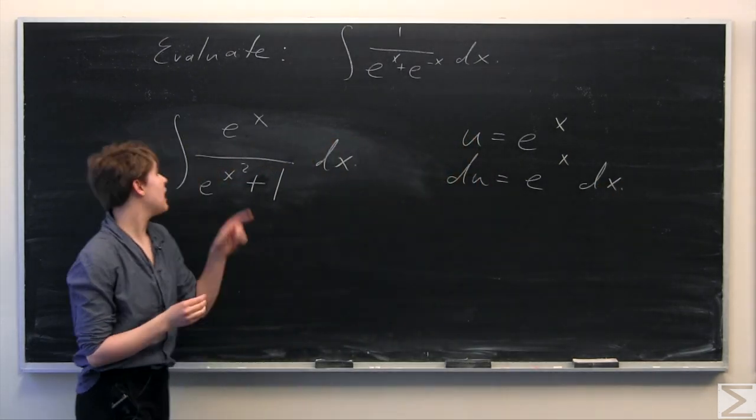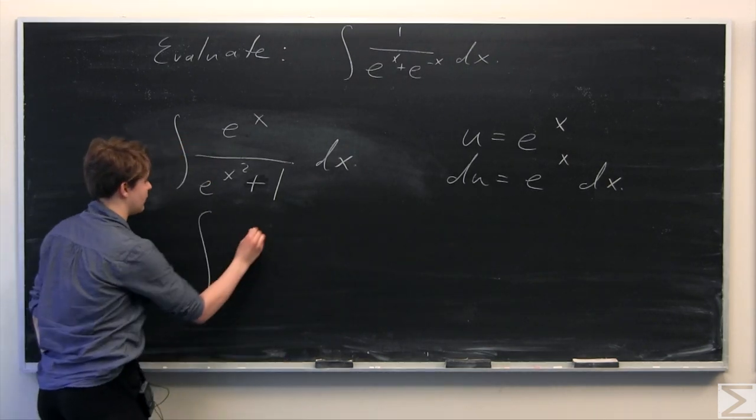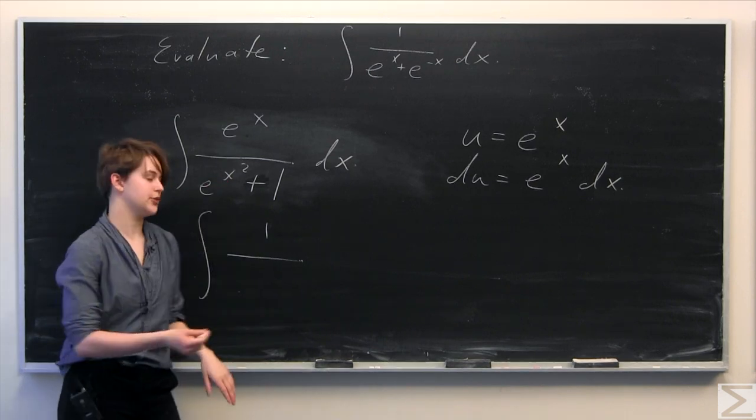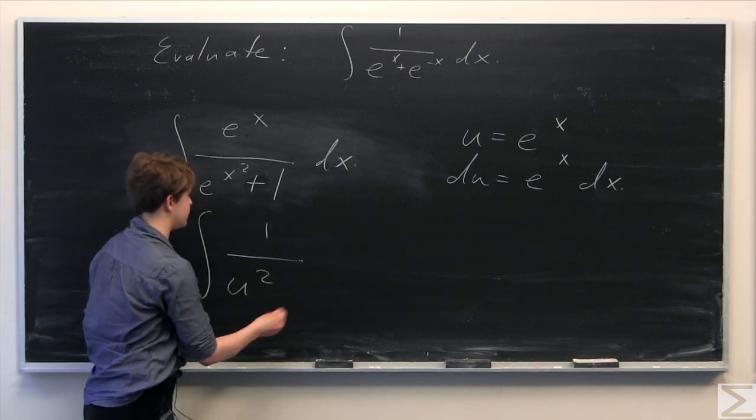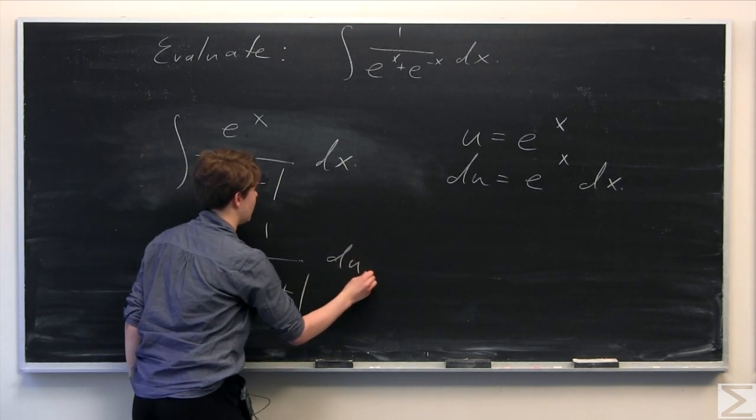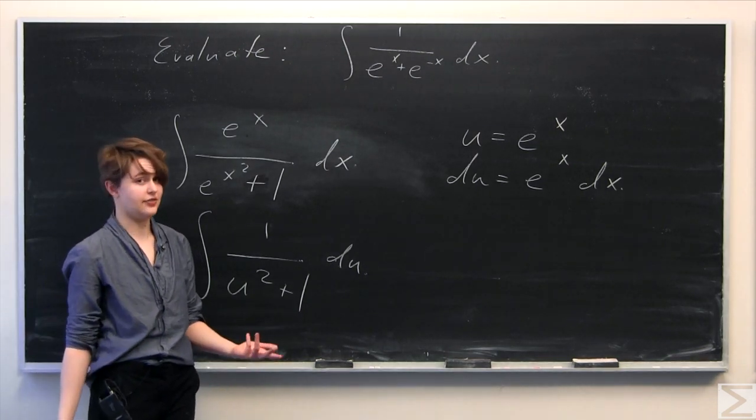Great. So we have e to the x dx here, which is just going to be replaced by du. So we have 1 over, and then e to the x squared is going to be equal to u-squared under our u-substitution, plus 1, which is unchanged by the u-substitution. And then we have the du. We don't need to worry about any bounds of integration because this is an indefinite integral.